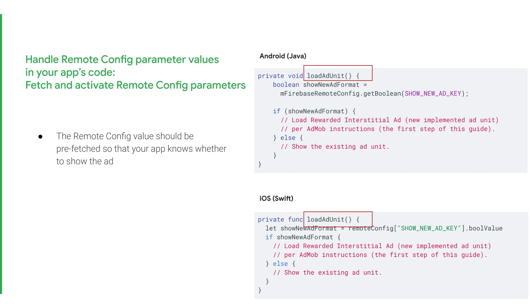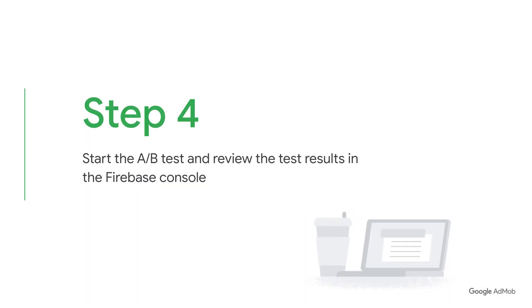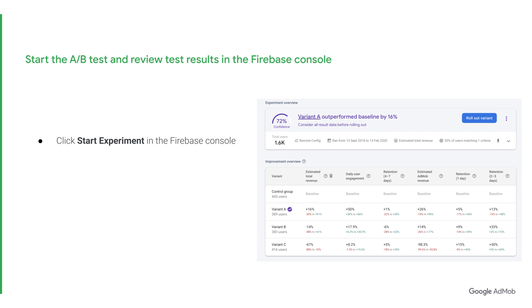You'll need the Remote Config value prefetch so that your app knows whether to show the ad. With the prefetch Remote Config value in the loadAdUnit function, determine whether the app instance should show or not show the rewarded interstitial ad unit. Lastly, add other checks for the parameter value — there are other areas in your application code where you'll need to check the value of this Remote Config parameter to instruct which ad experience will be loaded. Thereafter, you may start the A/B test and review the test results in the Firebase console. Start the A/B test by clicking Start Experiment in the Firebase console. Once you run the experiment, it will expose users to different variants.